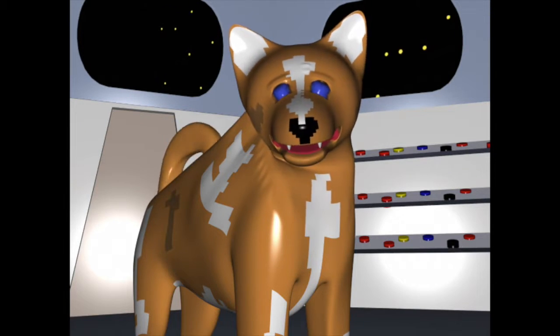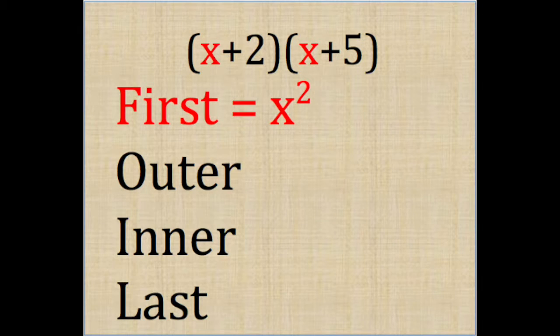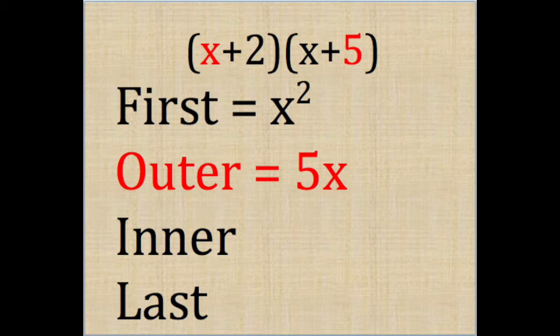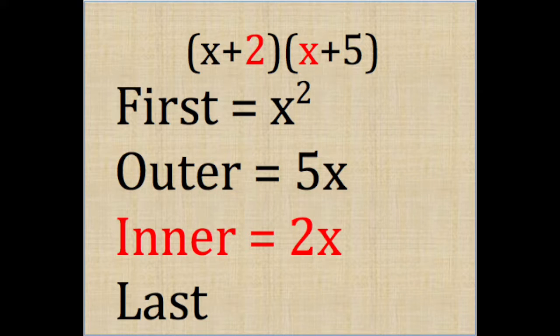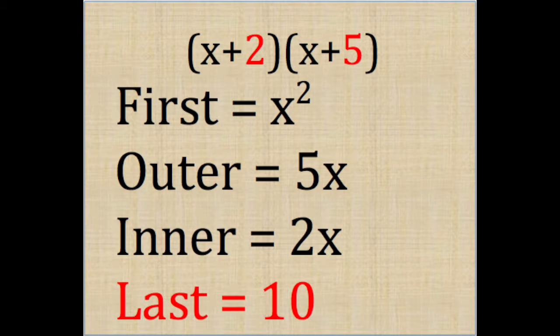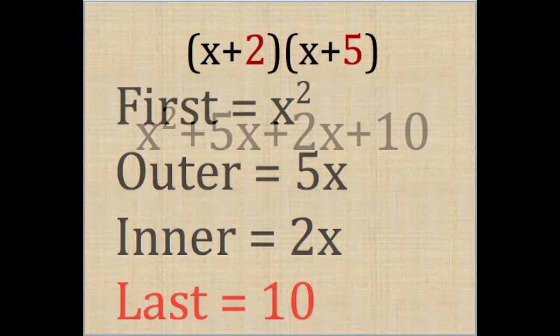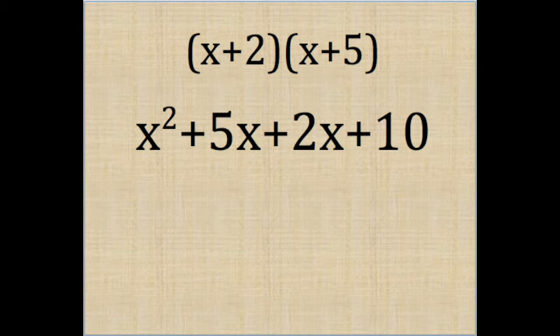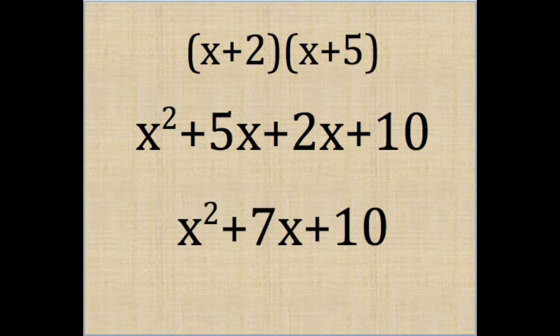Let's see how that works. We multiply the first parts of our two binomials to get x squared. Then we multiply the outer parts to get 5x. Then we multiply the inner parts to get 2x. And finally, we multiply the last parts to get 10. Then we combine like terms to get our final answer.